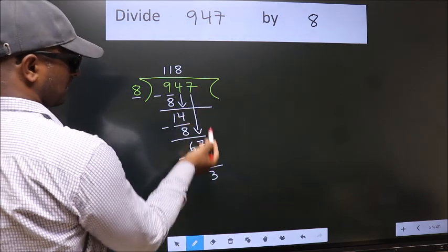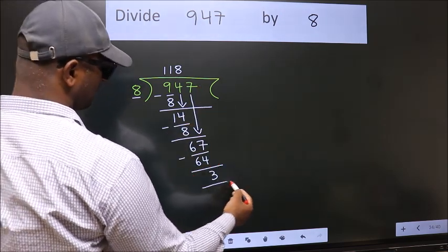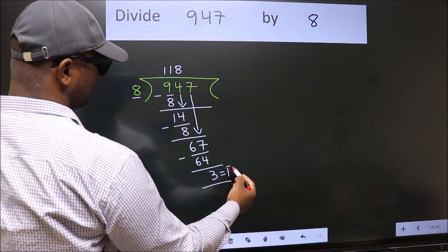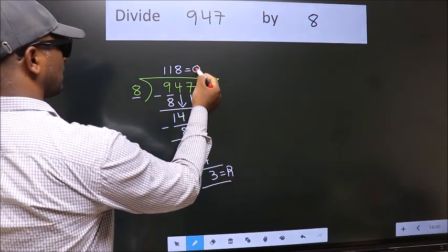No more numbers to bring it down. So we stop here. This is our remainder. This is our quotient.